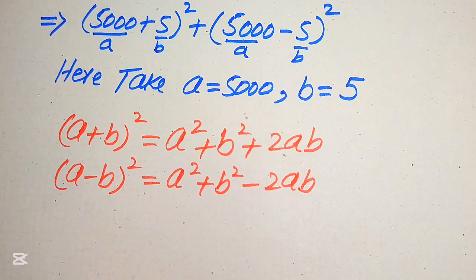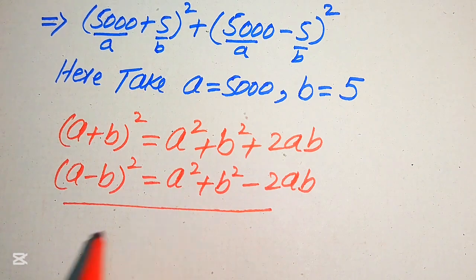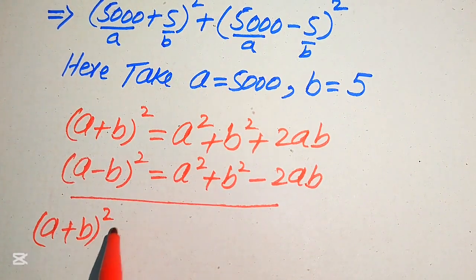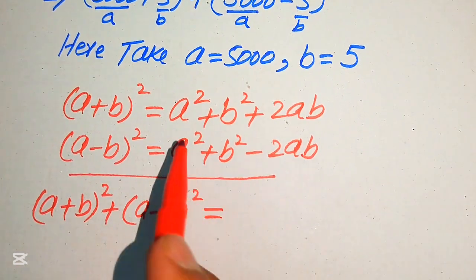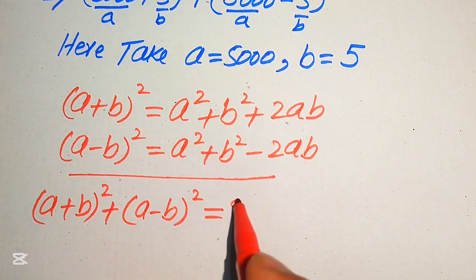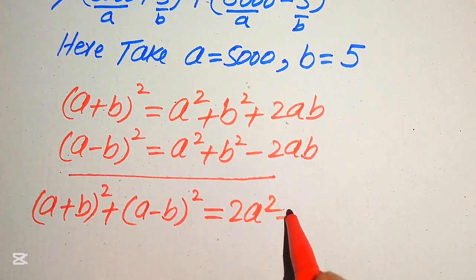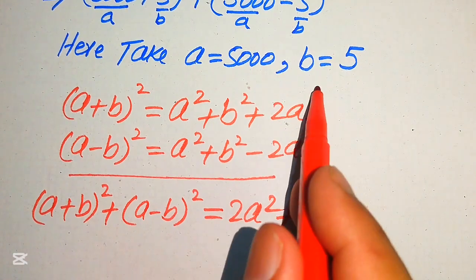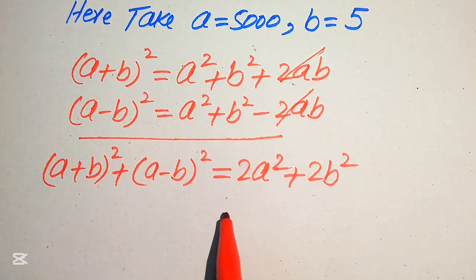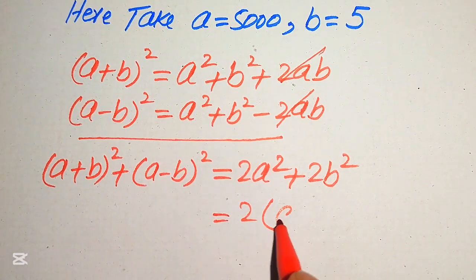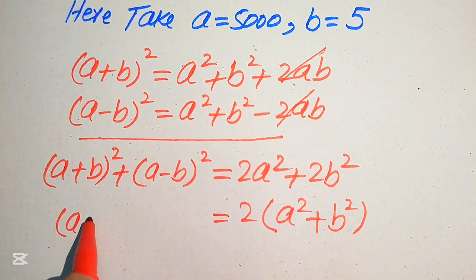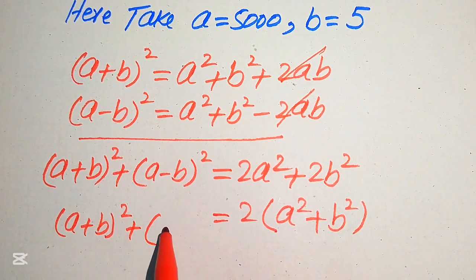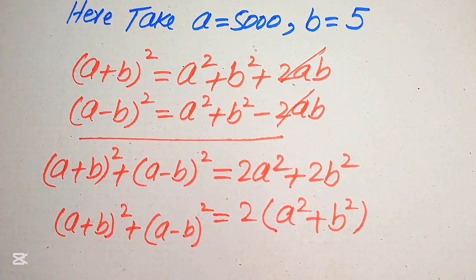From these two algebraic formulas, we derive another nice formula. If we add these two formulas together, we get (a + b)² + (a − b)² = 2a² + 2b². Taking 2 as common from the right-hand side, we get 2(a² + b²). This is our new derived formula.